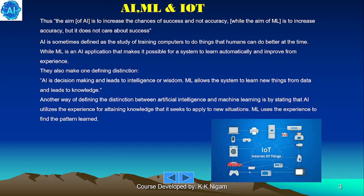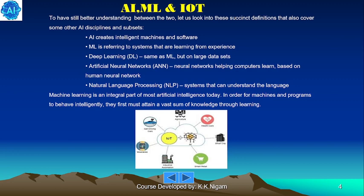AI is sometimes defined as the study of training computers to do things that humans can do better, while ML is an AI application that makes it possible for a system to learn automatically and improve from experience. They also make one defining distinction: AI is decision making and leads to intelligence or wisdom, while ML allows the system to learn new things from data and leads to knowledge. AI utilizes experience for attaining knowledge that it seeks to apply to new situations; ML uses experience to find patterns and learn.